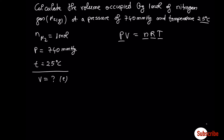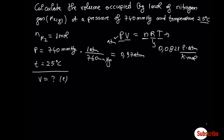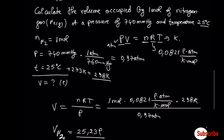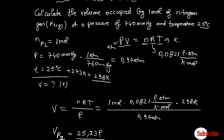The key issue here is that you must convert pressure to atmospheres — so 740 mmHg becomes the converted value. Volume should be in liters, number of moles stays the same, R is the constant, and temperature must be in Kelvin. Once the correct conversions are made, volume equals nRT divided by pressure. The volume occupied by one mole of nitrogen is 25.23 L.